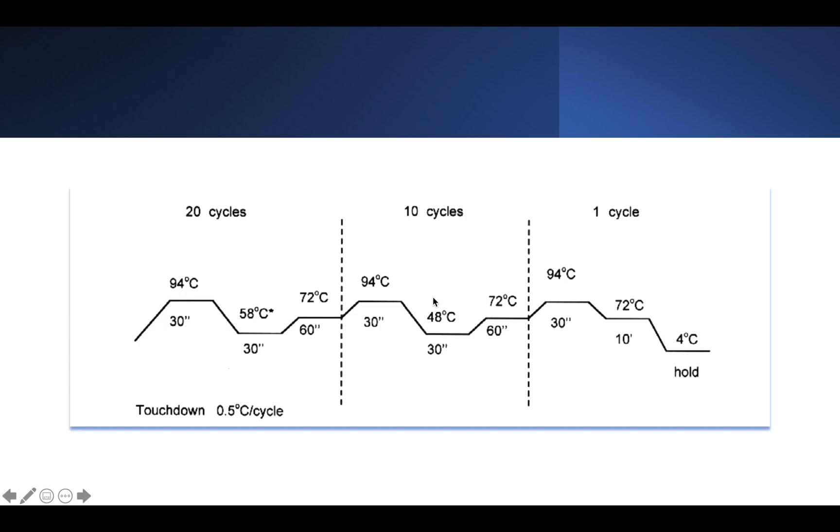In the second phase, the PCR is run for 10 cycles and the annealing temperature of this phase is set to 48 degrees Celsius. So now the PCR amplification or the DNA amplification would be carried out like a normal PCR reaction. And this is how we do the touchdown PCR.